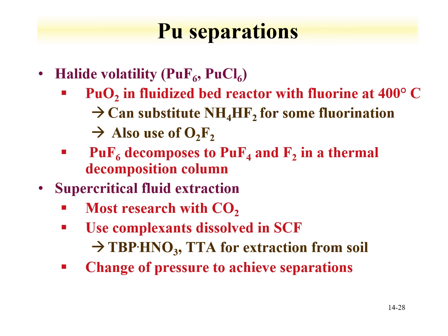Supercritical fluids have also been examined for extraction of plutonium, most evaluated being carbon dioxide. This supercritical fluid is also used with complexation ligands such as tributyl phosphate and thienoyltrifluoroacetone, and has been studied for extracting plutonium from contaminated soil. The ligands bind the plutonium and pull it out of the soil. When the supercritical fluid returns to normal atmospheric conditions, it goes to a gas phase, leaving behind plutonium with the ligands — achieving separation and concentration of plutonium from soil.